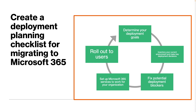The checklist covers: determining your deployment goals, which includes agreeing on scope and timeline and agreeing on project tracking mechanisms. The second stage is to inventory your current environment and make key deployment decisions. The third step is to fix potential deployment blockers. And the fourth step is to set up Microsoft 365 services to work for your organization.